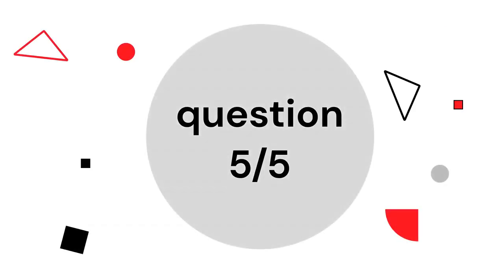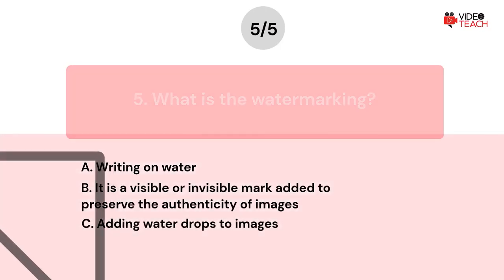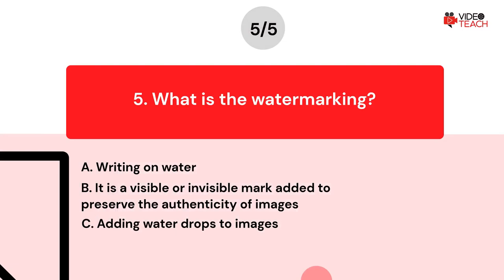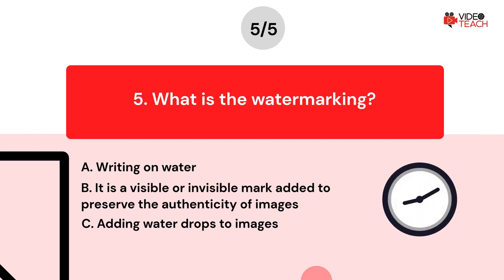Question number five. What is watermarking? Option A: Writing on water. Option B: It is a visible or invisible mark added to preserve the authenticity of images. Option C: Adding water drops to images. Now you have about 15 seconds to think about your answer.